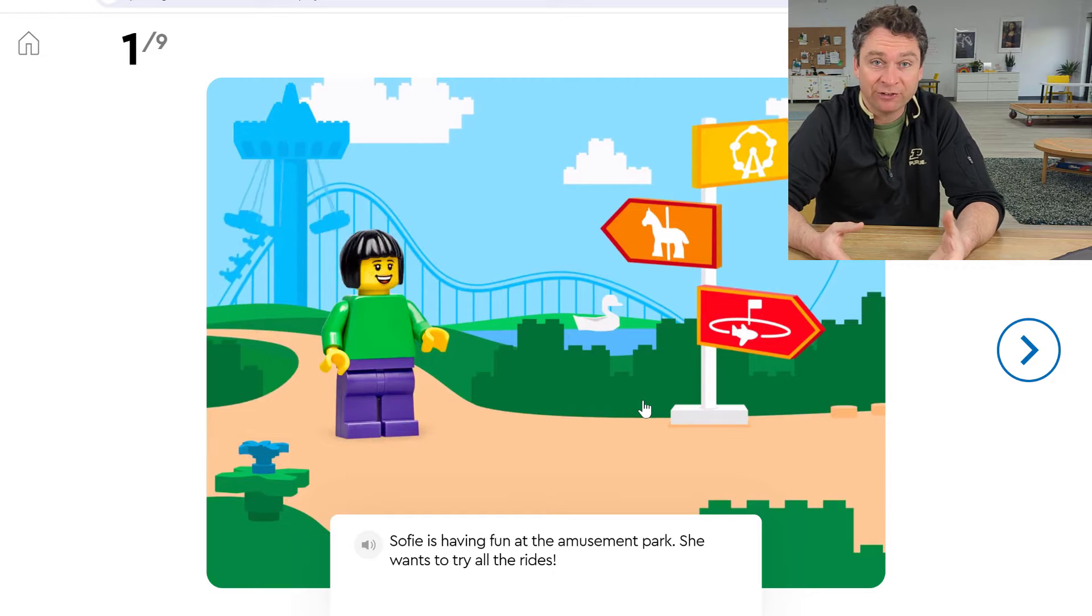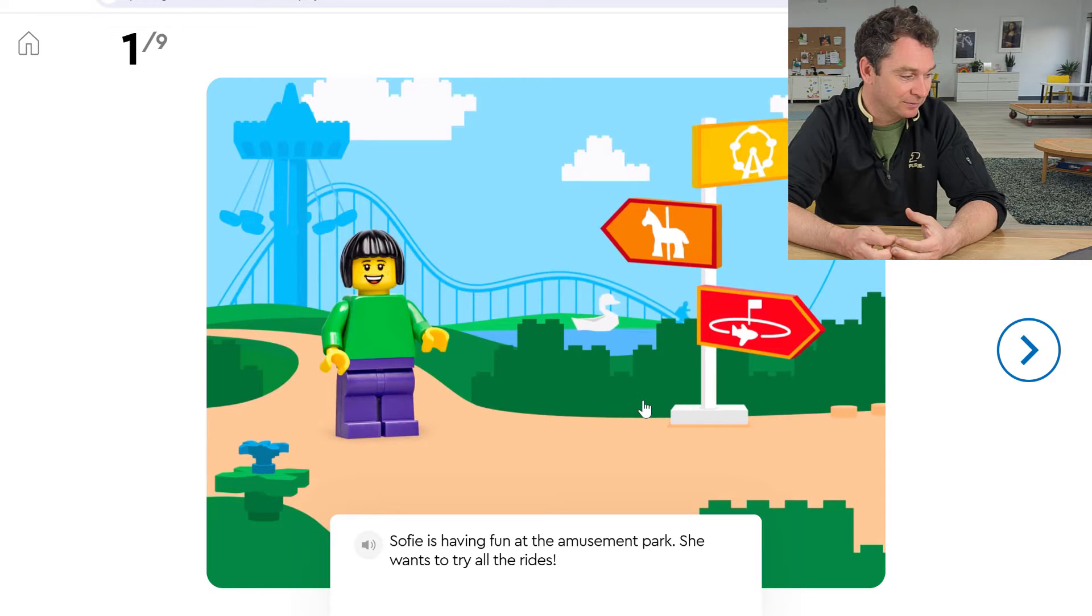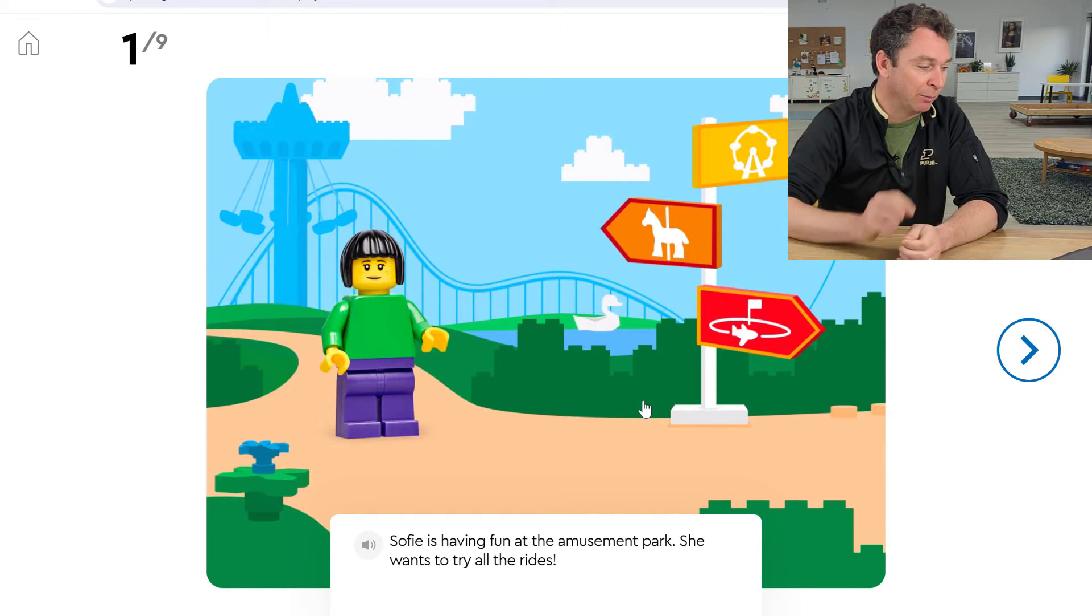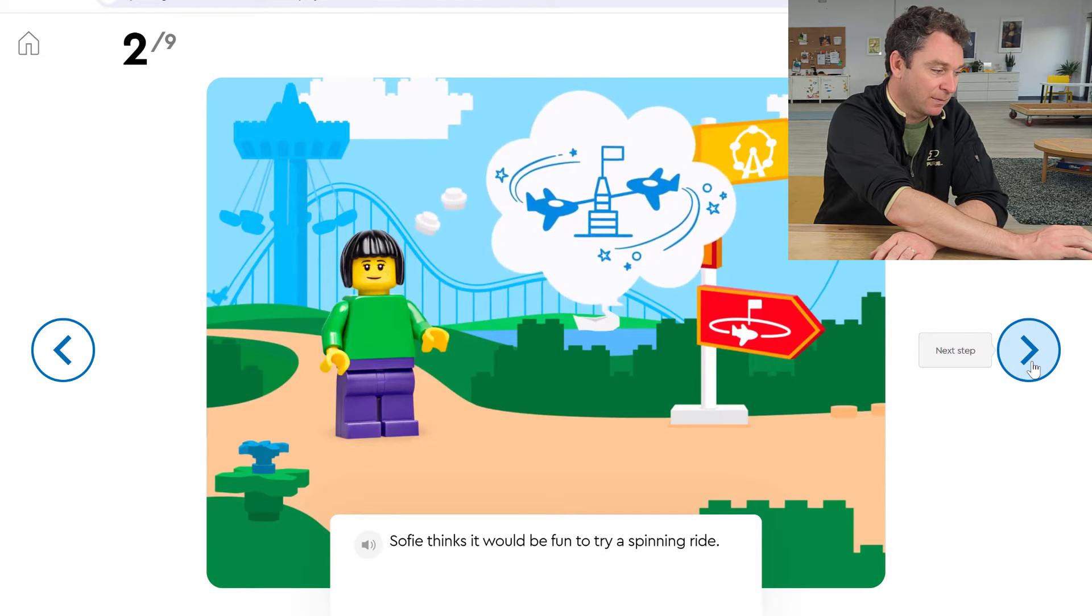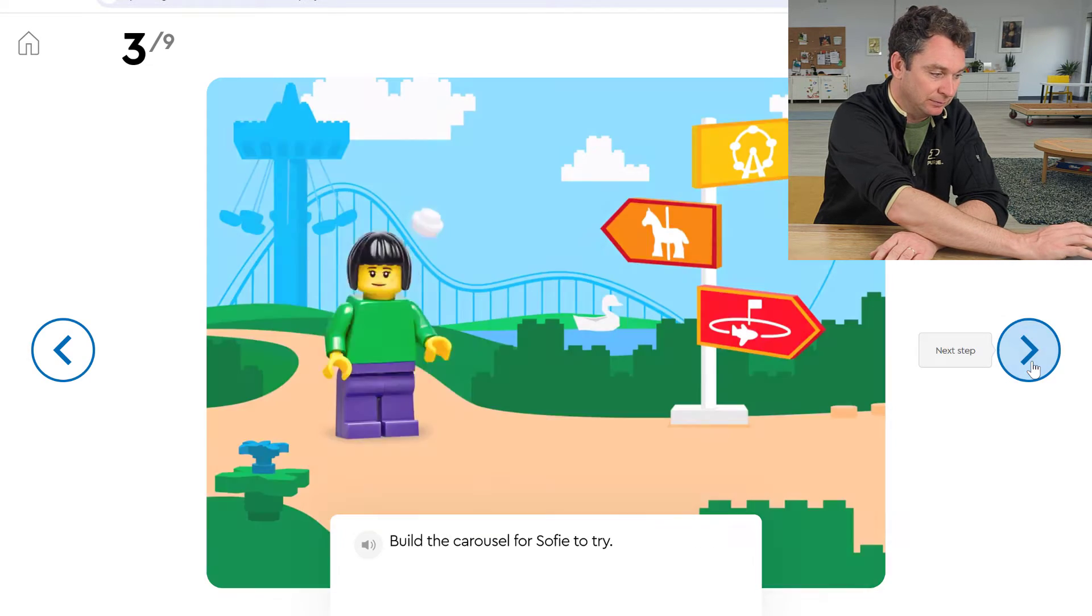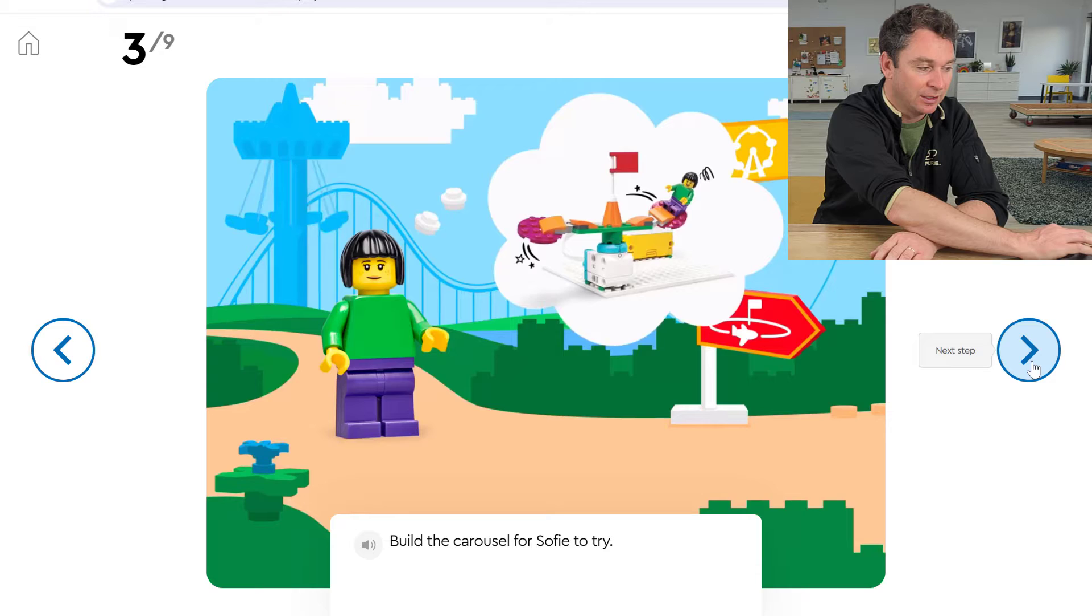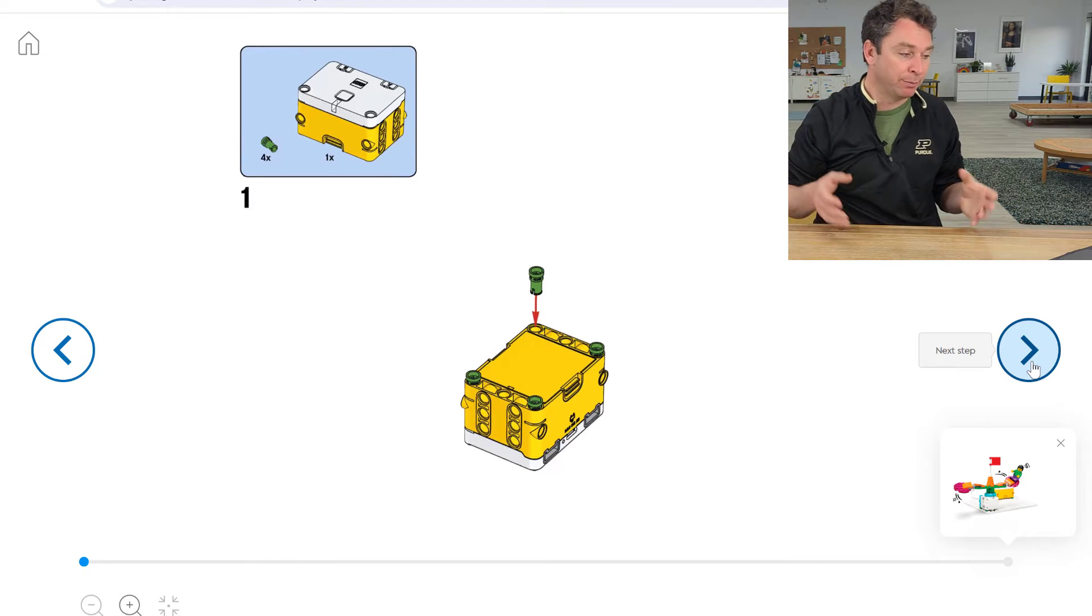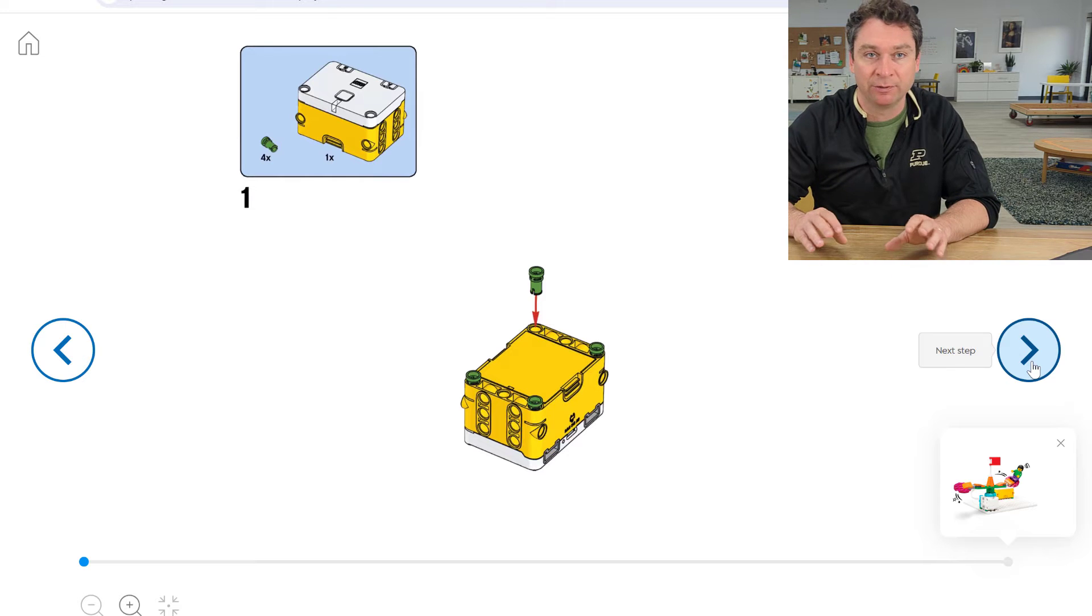I'm going to read this out loud. Sofie is having fun at the amusement park. She wants to try all the rides. Sofie thinks it would be fun to try a spinning ride. Build the carousel for Sofie to try. All right, so we will start. I'm going to build right here. You're welcome to mute me or pause me, or if you want to build right along with me, that'd be great. This is also a fantastic build if you have a brother or sister that wants to build with you as well.